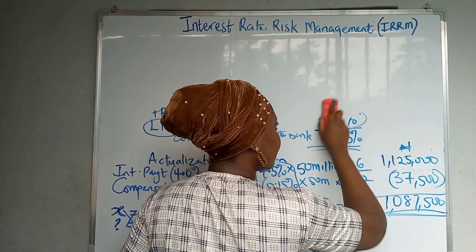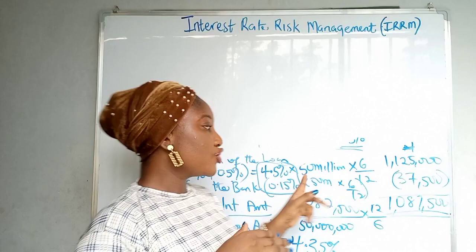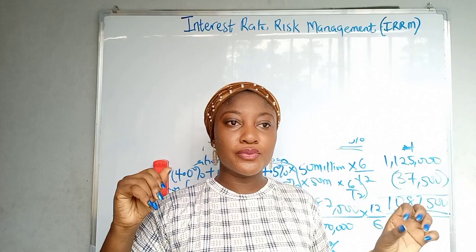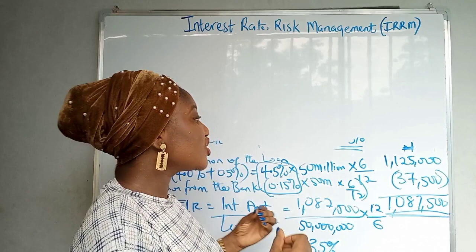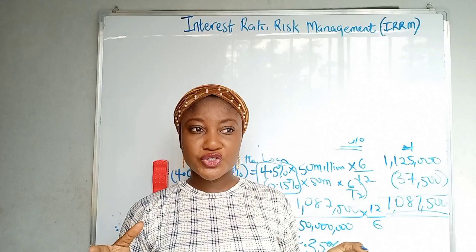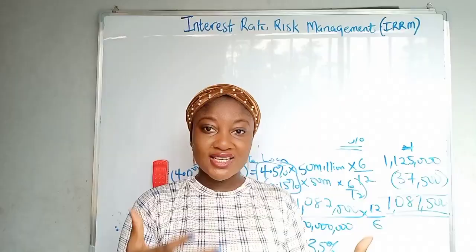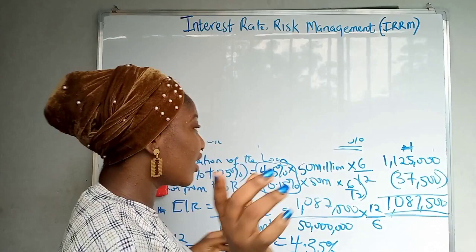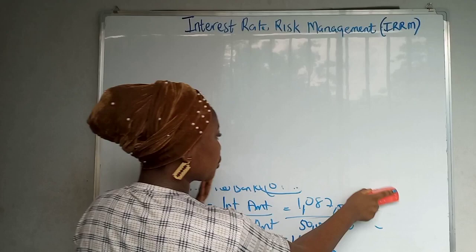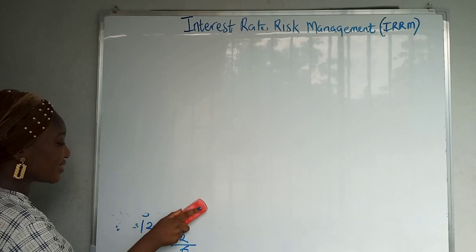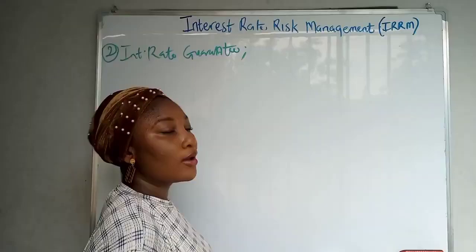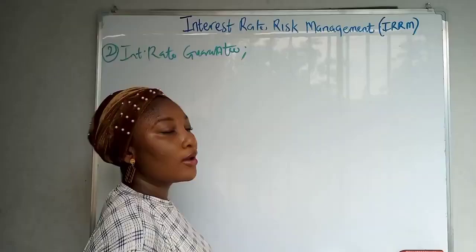Let's move to the second method — interest rate guarantee — which addresses the weakness in the FRA. With FRA there is no flexibility: once agreed, somebody has to compensate regardless of what happens. The interest rate guarantee is like an option — it's an over-the-counter option that gives you the right but not the obligation to exercise an action. You pay a premium for this. The interest rate guarantee gives you a guarantee because you pay a premium, so there are premium payments involved.